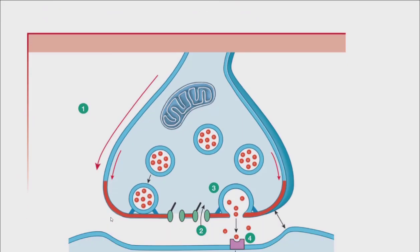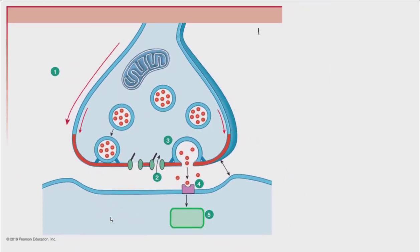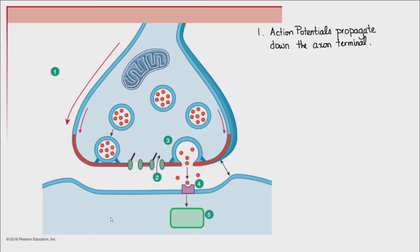Now let's bring this up to a college level and tell the whole story with more detail. Step one: action potentials propagate down the axon terminal. Step two: embedded in the axon terminal are voltage-sensitive calcium gates that open in response to the depolarization of the action potential.